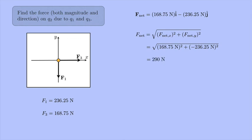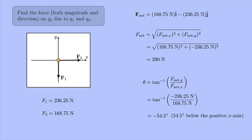To get the direction, I can take the inverse tangent of F net Y component over F net X component. And so that's the inverse tangent of negative 236.25 newtons over 168.75 newtons. And that's negative 54.5 degrees or 54.5 degrees below the positive X axis. And that makes sense. If you imagine adding F1 and F3, you would get something that's pointing below the positive X axis.